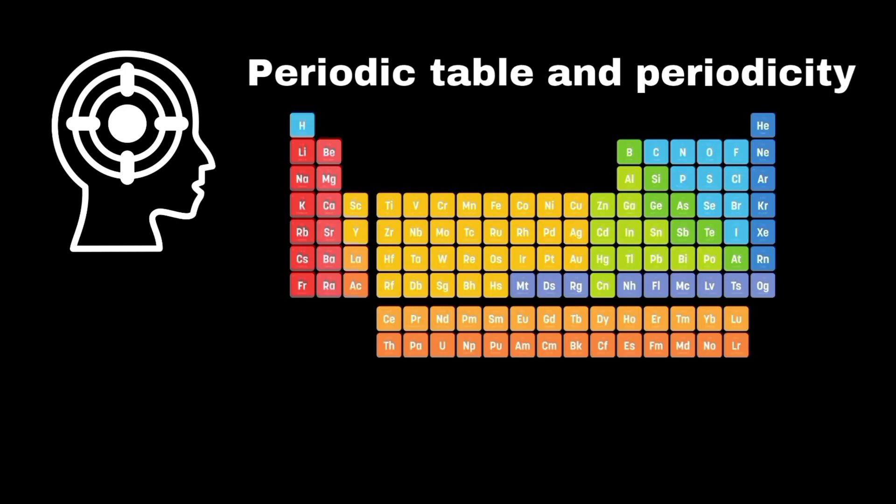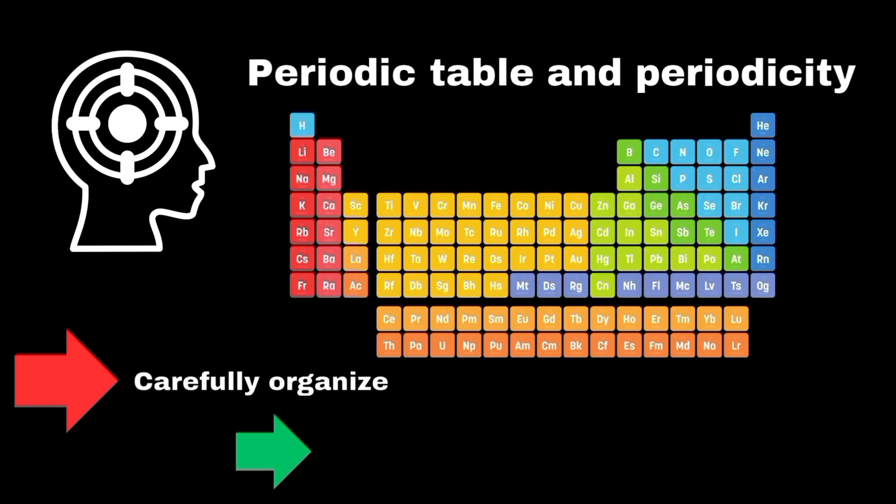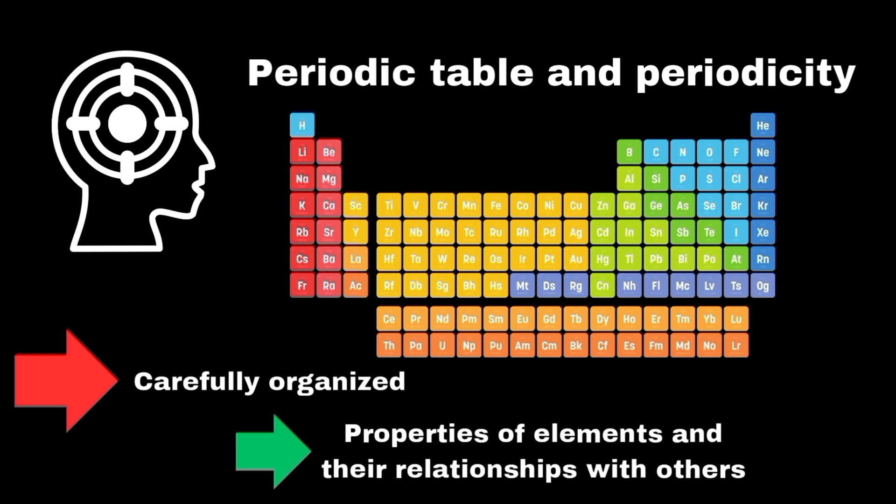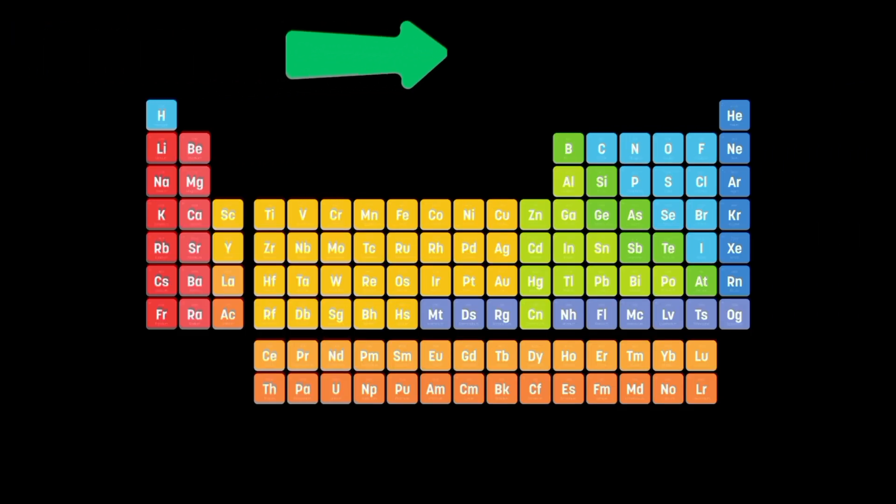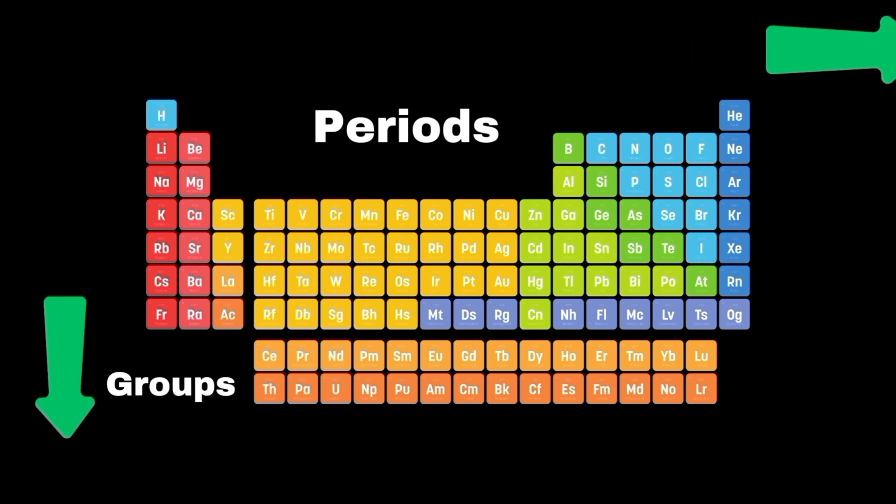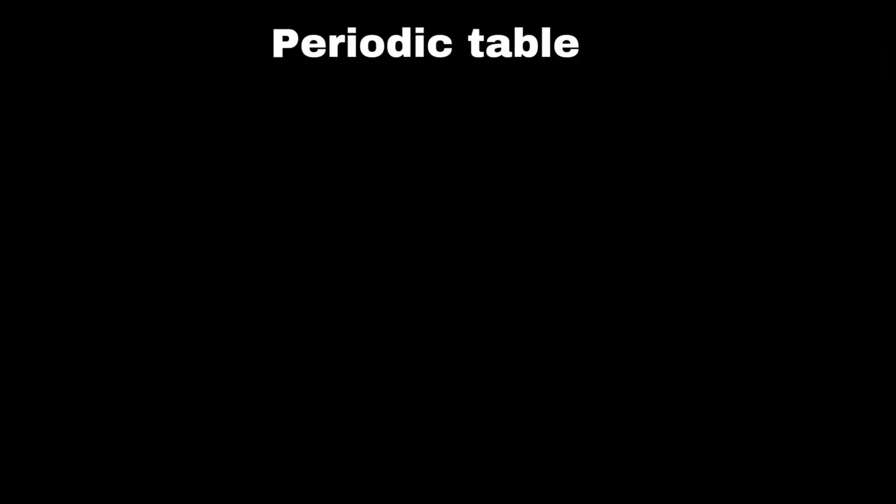Now let's focus on periodic table and periodicity of properties. The periodic table is a carefully organized chart that helps us understand the properties of elements and their relationships with one another. The horizontal rows in the periodic table are called periods and vertical columns are called groups. There are total 18 groups and seven periods in periodic table.